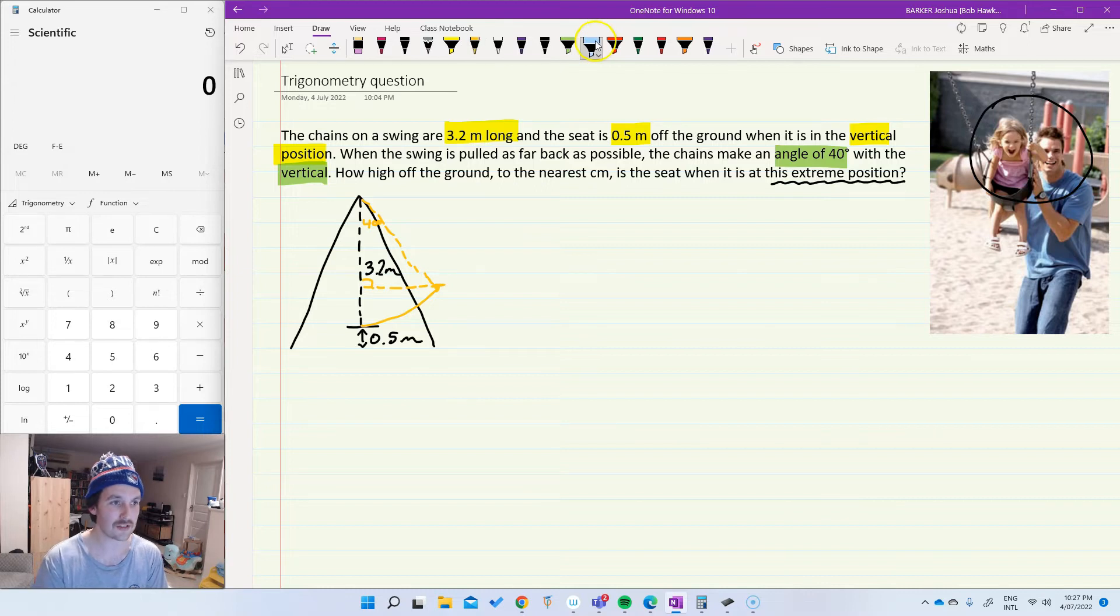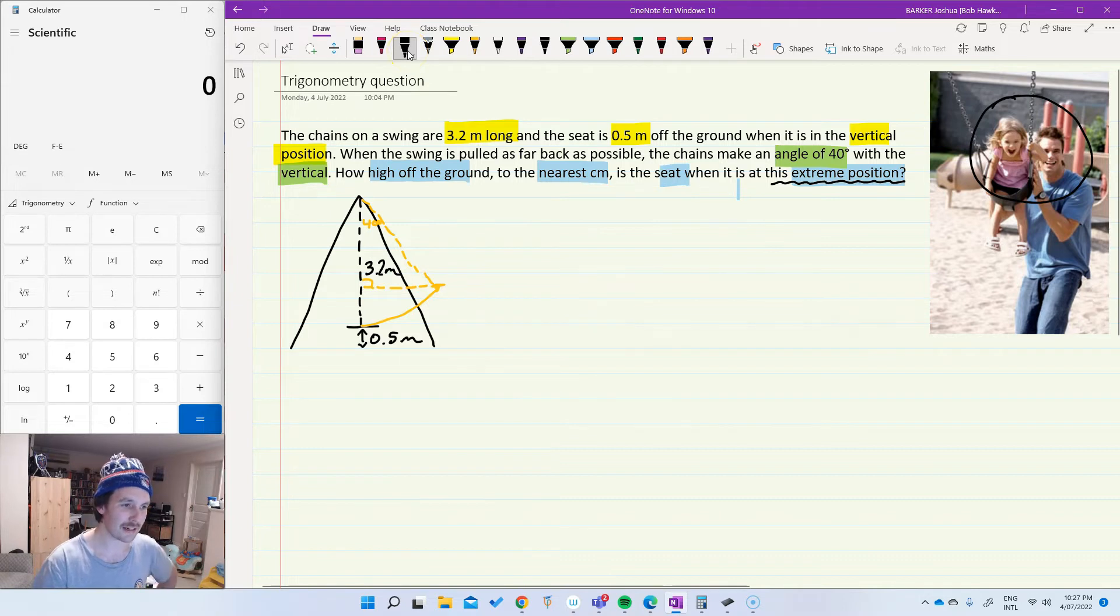And then the actual question that we have to answer, how high off the ground to the nearest centimeter is the seat when it's at this extreme position? Okay, so what we're looking at here, if I can just do another diagram here just to the side, what I'm going to do is just draw the chain to begin with. Chain is 0.5 meters off the ground. So between here and here, the length of this chain here is 3.2 meters.